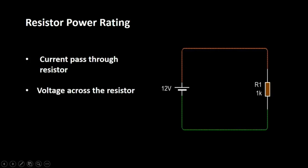In this video, we learn how to calculate power in a resistor and selection of resistor according to its power rating. Power in a resistor depends on two parameters: the first parameter is the current passing through the resistor, and the second parameter is the voltage across the resistor.